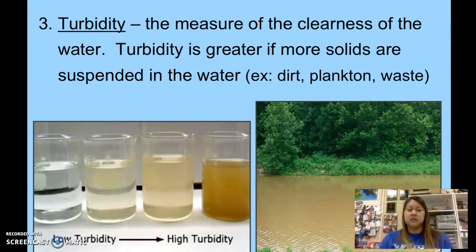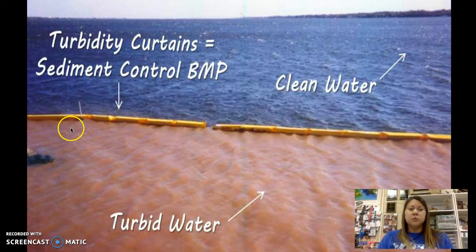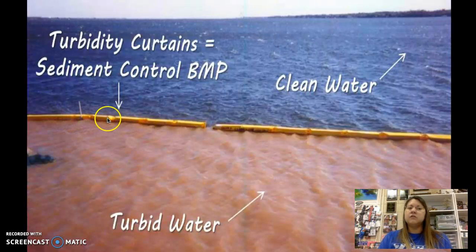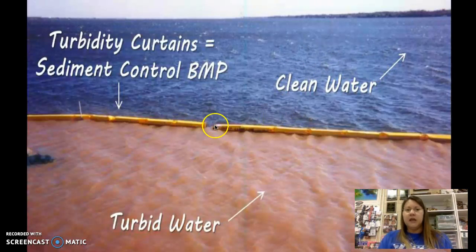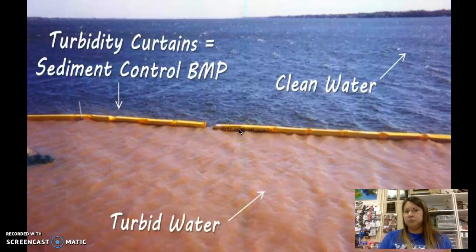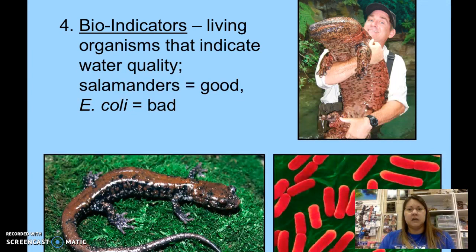One way some places manage turbidity is with a turbidity curtain — basically a dam built to prevent sediment-laden turbid water from mixing with clean water, which might be a reservoir used for drinking water. It has a small opening so it doesn't build up too much pressure and break. The turbidity curtain helps control turbidity in the clean water section.